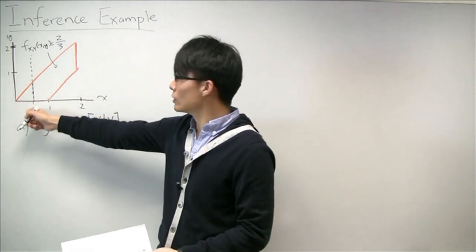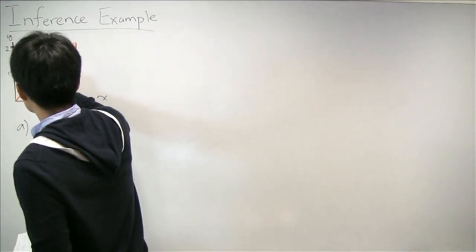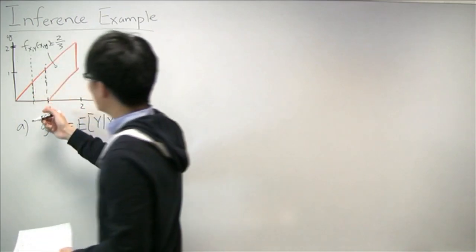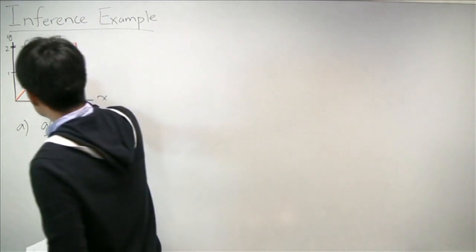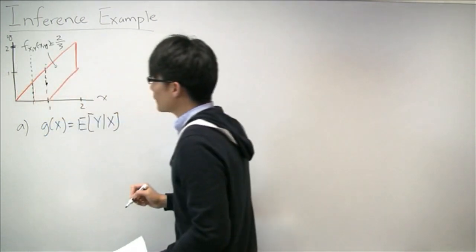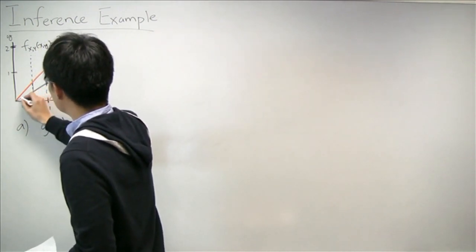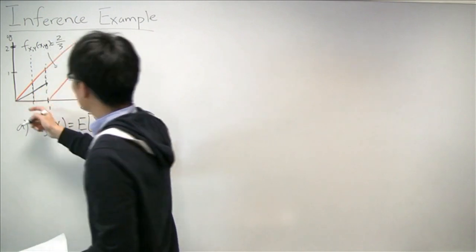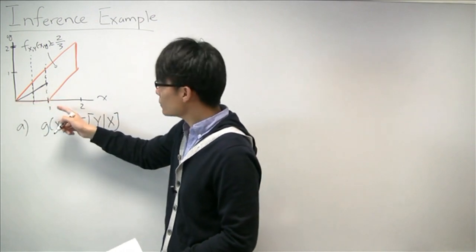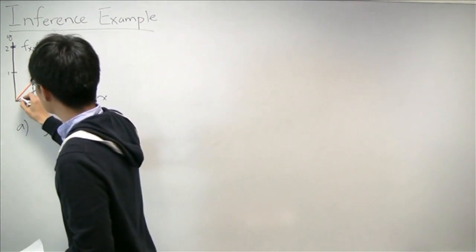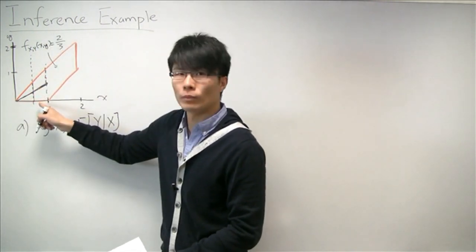That would be the conditional expectation of Y given that X is 1/2. We do the same thing for X equals 1. Again, because everything is uniform, this slice is also going to be uniform. So the conditional expectation will again be the midpoint. And just looking within this region, it's always going to be the midpoint. So the conditional expectation of Y given X will look like that line, which you can think of as bisecting the angle formed by these two parts of the region.